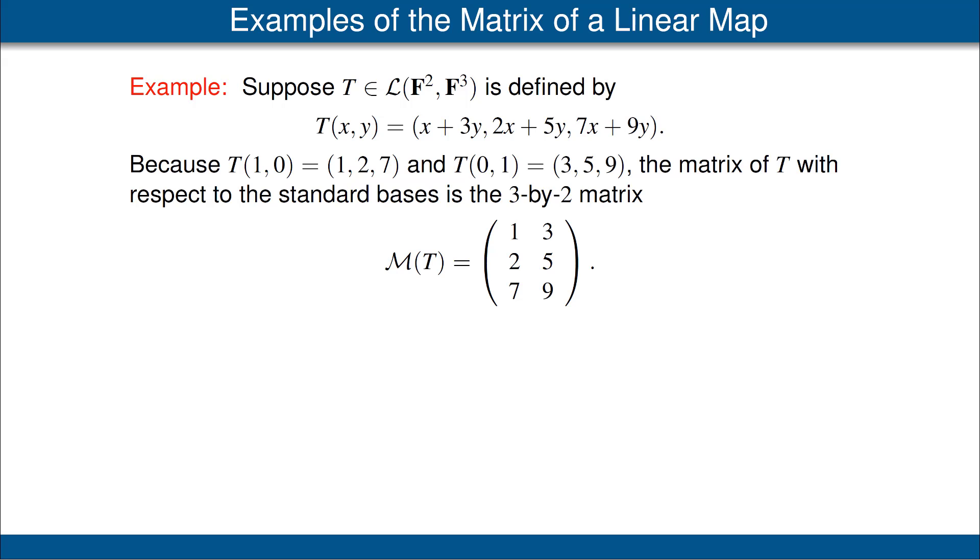Let's look at two examples of the matrix of a linear map. Our first example is a linear map from F² to F³. This linear map is called T and it's defined as we see here in this equation. We want to write the matrix of T with respect to the standard basis. Recall that the standard basis of F² is the list (1,0) and then (0,1), and the standard basis for F³ is the list (1,0,0), (0,1,0), (0,0,1).